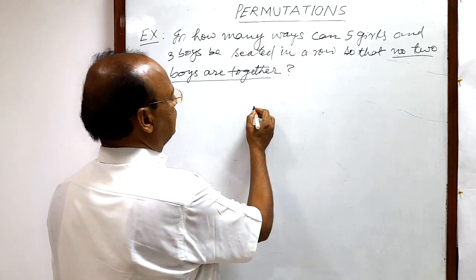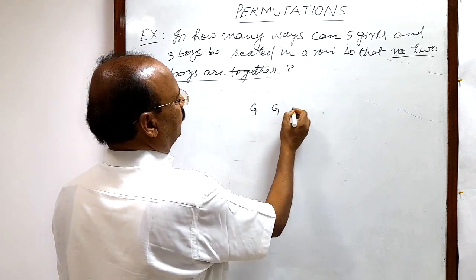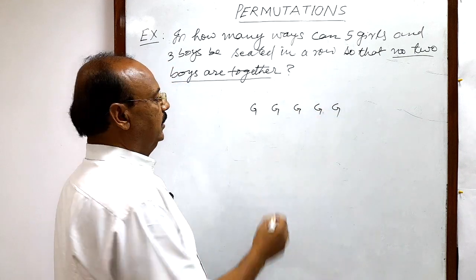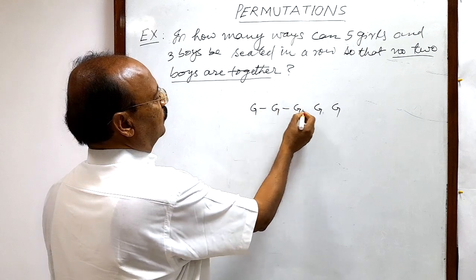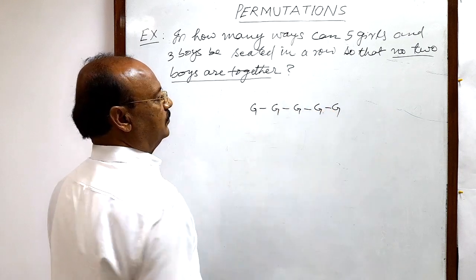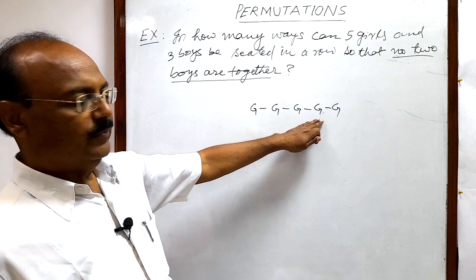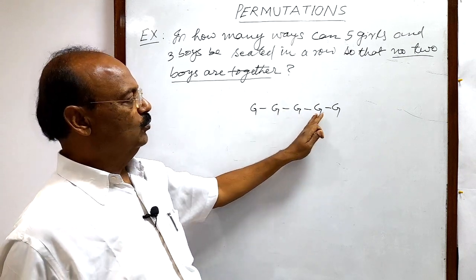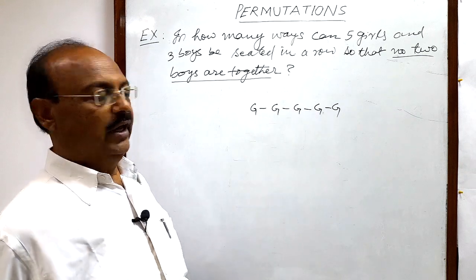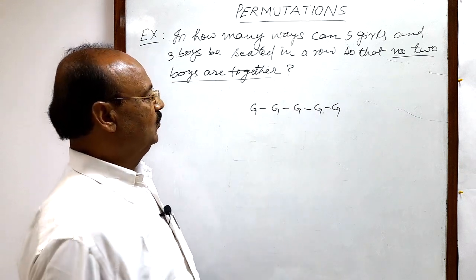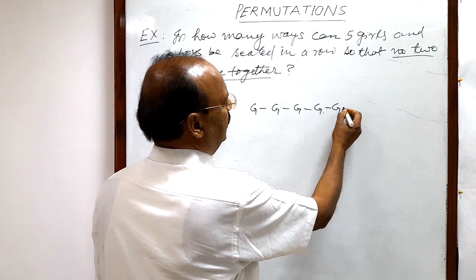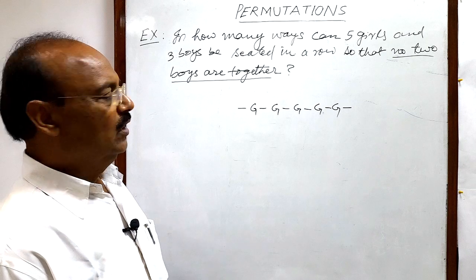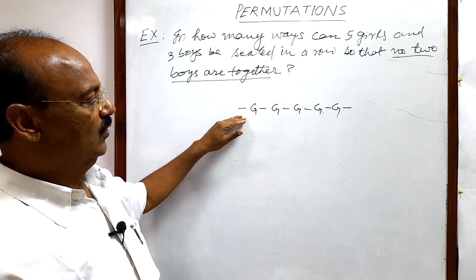So if girls are sitting in a row like this, there are five girls and in between these girls boys are sitting, then there will be no two boys sitting together. And in fact, the place for boys will be at the last and in the beginning of this row also. The condition will be fulfilled.